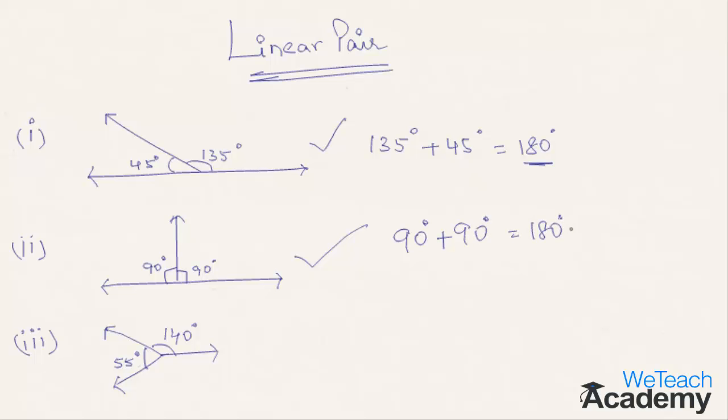Let us go with the third example. Here these angles are not a linear pair since the sum of these angles is 140 plus 55 degrees, which equals 195 degrees. Hence, these are not a linear pair of angles.